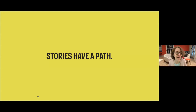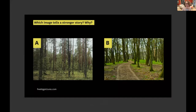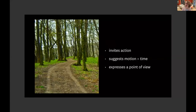Another really important idea about stories is the idea of a path — every story takes us somewhere. It has duration, a beginning, middle, and end. Now we see two pictures of a forest in spring. I see a lot of people saying B, and I agree — we seem to go somewhere with B. These are images with a path. Just putting an image of a road invites action; it suggests motion and time and a point of view. Suddenly we are a person standing on that path.